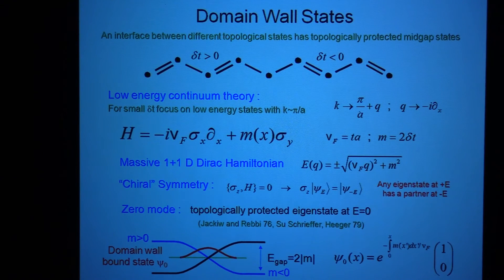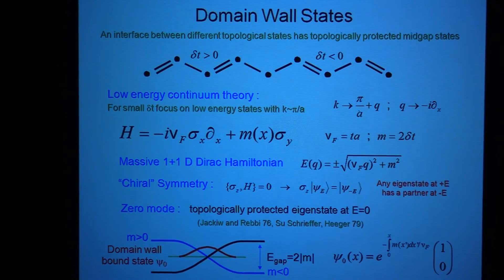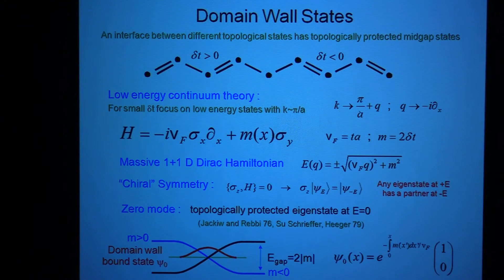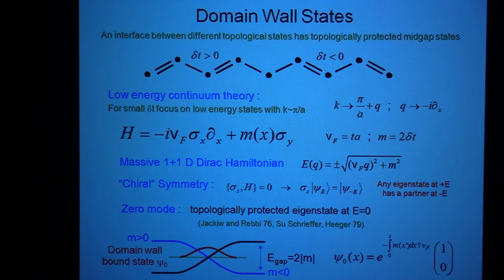So there's a difference between thinking about these different kinds of symmetries. The most important consequence of this topological classification is what happens when you have a boundary between the two different topological states. This is something that's very simple to understand in the limit where I make the strong bonds really strong and the weak bonds really weak — I can just turn the weak bonds off completely. Then I just have these pairs of dimers, which have two states split by a huge energy, so there's a huge gap everywhere on the left and everywhere on the right. But on the boundary there's a single state that doesn't talk to anybody — a state at zero energy.